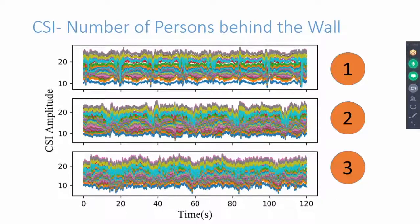We gradually increased the number of people moving behind the wall from 1 to 3. Our investigation shows that as the number of moving targets increases, variance of CSI data also increases.